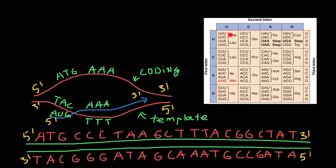Now I want you to pay attention to this codon table. This codon table is based on messenger RNA. So if we want to find a gene in a sequence of DNA, we just have to change uracil with thymine, and we have to look for the start codon, which is AUG in messenger RNA. In the coding strand of the DNA, it's going to be ATG. This is going to be our first step.